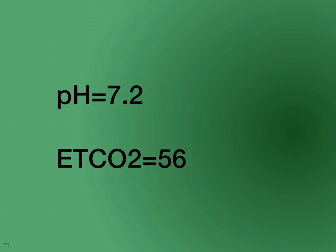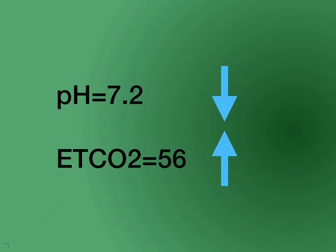Here's another one: pH is 7.2 again, and the end-tidal CO2 is 56. In this case, pH is down and end-tidal CO2 is up. The arrows are moving in opposite directions, so respiratory opposite — I know this is respiratory. And looking at the pH of 7.2, that's acidosis, so this is respiratory acidosis.